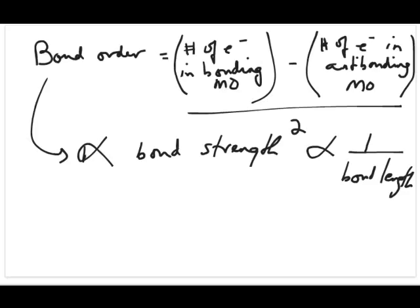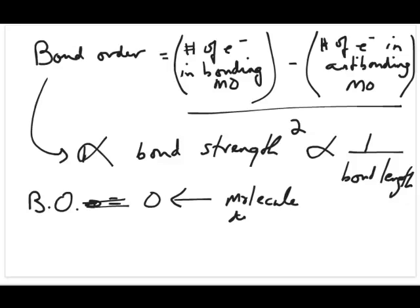One more thing: bond order is proportional to bond strength, and the lowest value you can get is 0. When bond order equals 0, the number of electrons in bonding equals those in antibonding, so the energy doesn't prefer molecule formation — the molecule doesn't exist. As bond order goes higher, the molecule exists and the bond gets stronger.